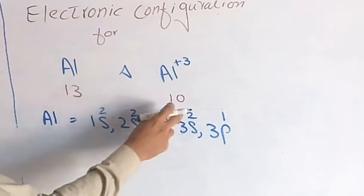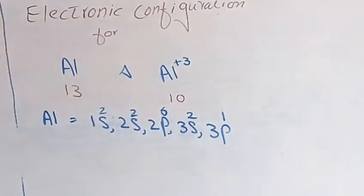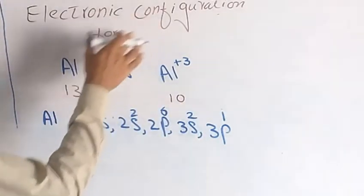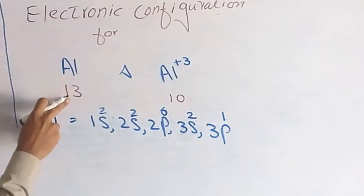2, 2, 4, 6, 10, 12, 13. So the electronic configuration of aluminium totals 13 electrons.